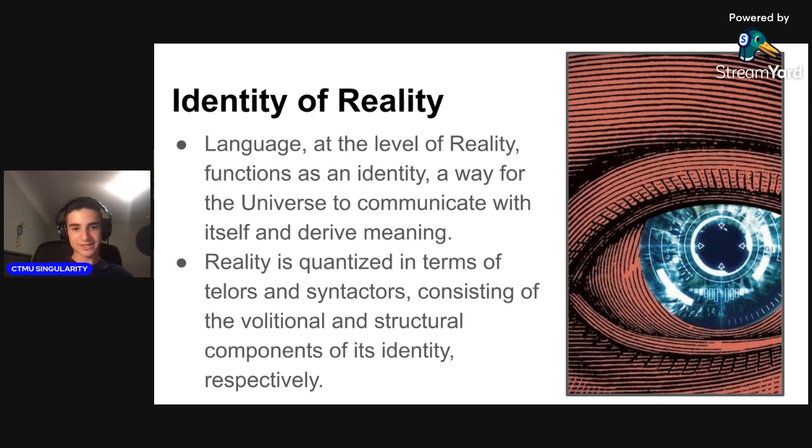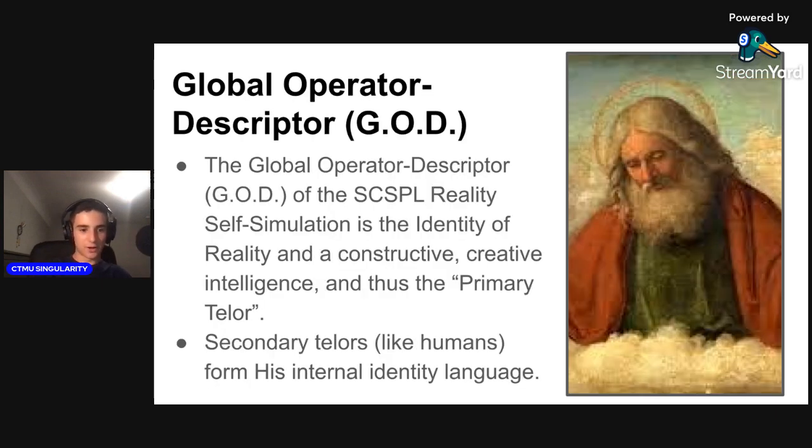The universe is not fundamentally composed of point particles or objects, but instead self-dual linguistic and physical objects called syntactic operators, which can transform the SCSPL to instantiate a physical object or process. Thus the entire syntax of reality is contained in every local identity, every local entity, which is why reality is intelligible to itself and mutually intelligible among its several parts. Syntactic operators transform the syntax of the reality language according to the global intent and volition of tellers.